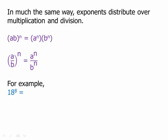Here's a very quick numerical example. Suppose we have 18 to the 8th. Well, we know that we could write 18 as a product — we could write it as its prime factorization. The prime factorization of 18 is 2 times 3 squared. So 18 to the 8th equals (2 times 3 squared) to the 8th.